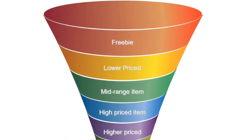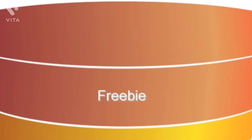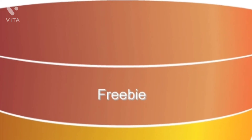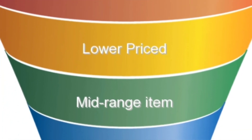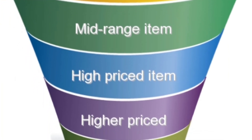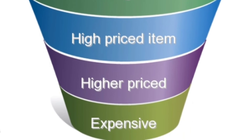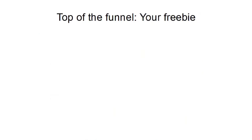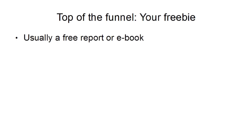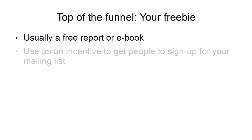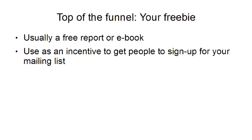Let's take a look at a typical sales funnel again. You start at the top with a freebie to get people to sign up to your mailing list, then sell them a lower-priced item, then a mid-range item, then a high-priced item, a higher-priced item, and finally a very expensive item or service. As people go down the sales funnel, they build more and more trust in you and you can sell them more and more expensive things.